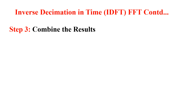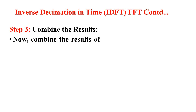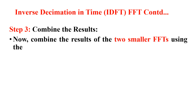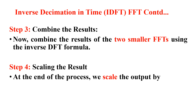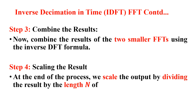Step 3: Combine the results. Combine the results of the two smaller IDFTs using the inverse DFT formula. That is step number 3. Step 4: Scale the result. At the end of the process, scale the output by dividing the result by the length N, which is equal to 8 in this case.